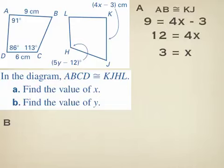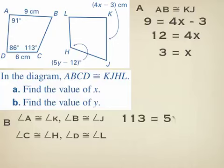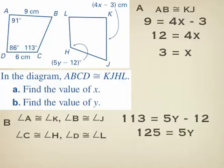Part B asks us to find the value of Y, which is the measure of angle H. Based on the congruence statement, angle C is congruent to angle H. Angle C measures 113 degrees and angle H is 5Y minus 12. Setting them equal: 113 equals 5Y minus 12. Adding 12 to both sides gives 125 equals 5Y. Dividing both sides by 5 gives Y equals 25.